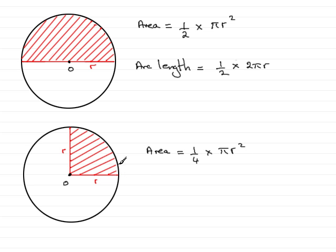And the arc length, the distance from here to here, would be a quarter the circumference. So we have that the arc length equals a quarter of the circumference. And the circumference of a circle, again, is 2π r.